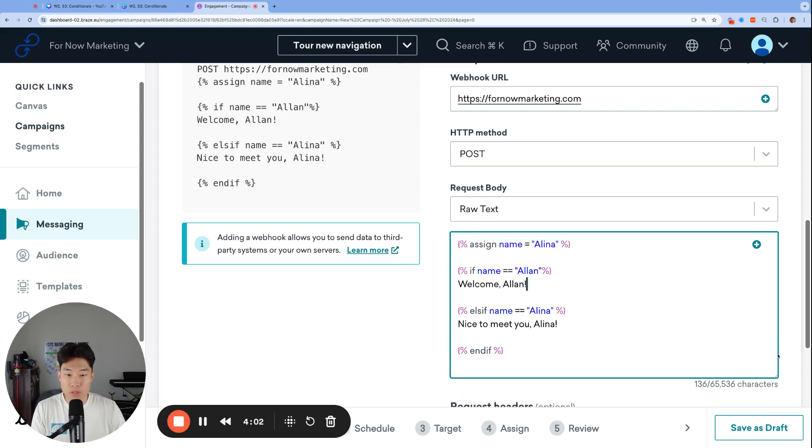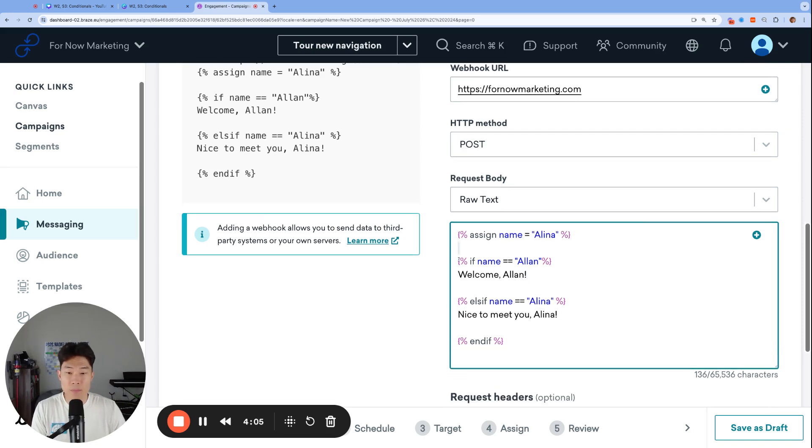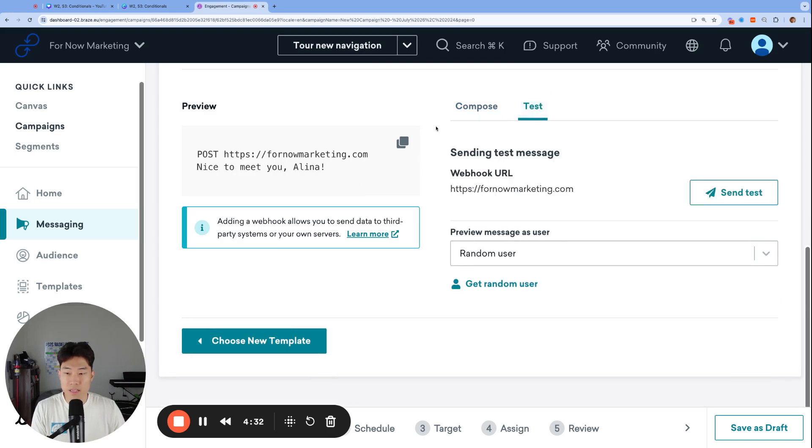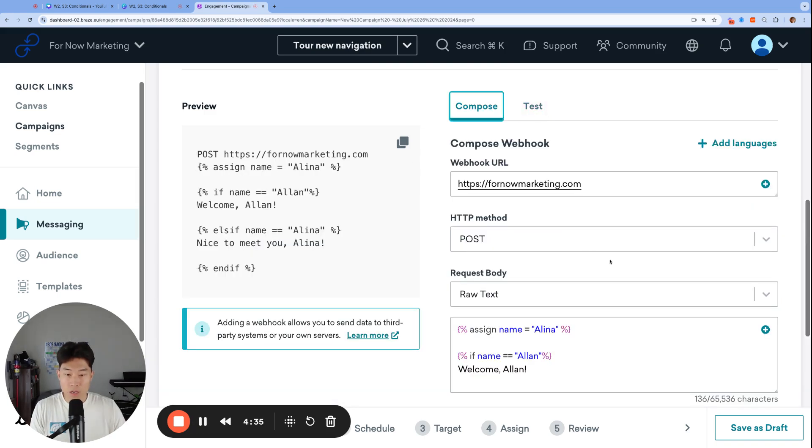What's going to happen in our liquid code is it's going to first check the first top if statement. And liquid is going to ask, well, does name equal Alan? In our case, it does not equal Alan. So it's going to say, okay, let's move on to the next conditional statement and see if that one's true. So else if name equals Alina. Our name does equal Alina. So now it's going to run everything between that else if and then the following if statement, which is the end if syntax. So let's see what happens. Nice to meet you, Alina.